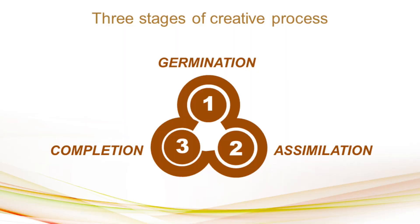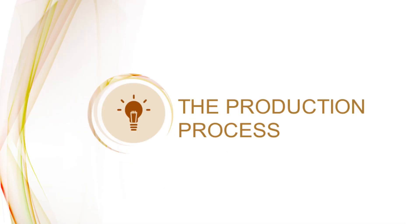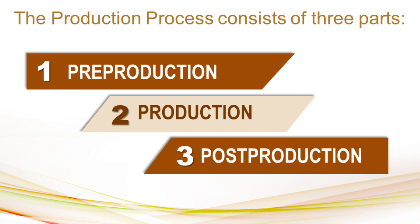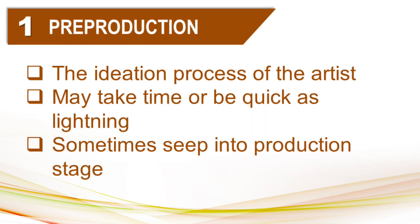So let's have a short recap: the three stages of the creative process are germination, assimilation, and completion. Next, let's have the production process. The production process also consists of three parts: pre-production, production, and post-production. In producing an artwork, number one is pre-production, which is the ideation process of the artist. It may take time or be quick as lightning — sometimes the idea just comes suddenly, and sometimes it zips into the production stage also.